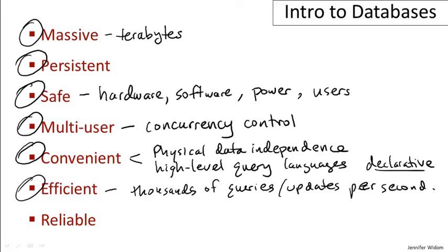And lastly, but again not last in importance, is reliability. Looking at your banking system or your telecommunications system, it's critically important that those are up all the time. 99.99999% uptime is the type of guarantee that database management systems are making for their applications.